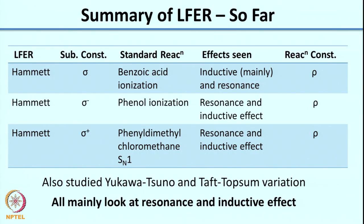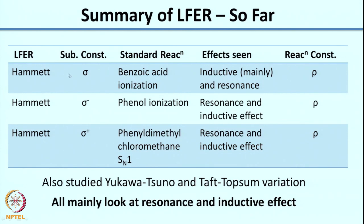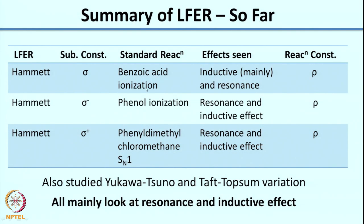So we have now seen two examples of deviation from linear free energy relationships: one where the rate-determining step changes but the mechanism remains the same, and another where the mechanism itself switches depending on the substituent on the aromatic ring. To summarize what we have seen so far with LFER, we have seen the Hammett correlation giving substituent constants sigma, sigma minus, and sigma plus. In all these cases you have a standard or basis reaction which gives the x-axis of your Hammett plot, and the correlation factor is rho, also called the reaction constant.